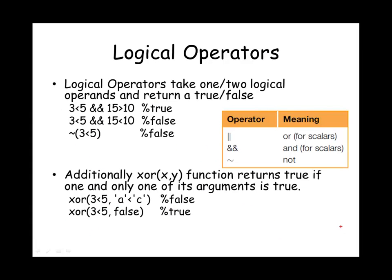You can combine multiple logical values into a new logical value using logical operators. The AND operator tests whether both operands are true. In this case, we test whether 3 < 5 is true AND 15 > 10 is true — since both are true, the result is also true. In the second example, 3 < 5 is true and 15 < 10 is false, and the result is false because the AND operator returns true only when both operands are true.